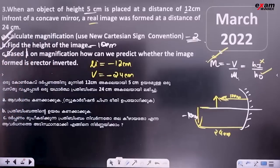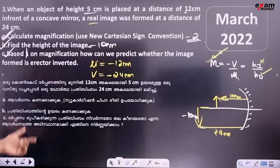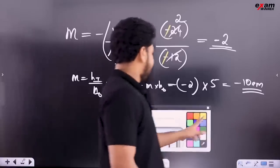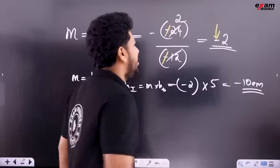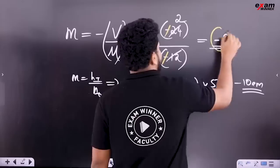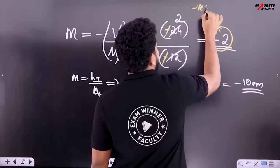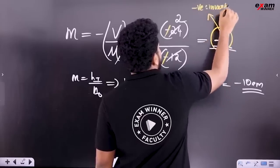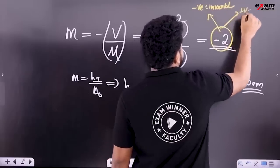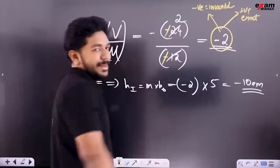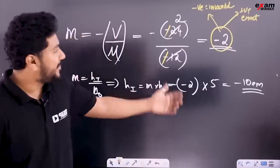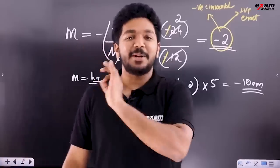Based on magnification, how can we predict whether the image is erect or inverted? The magnification value is negative. If magnification is negative, the image is inverted. If you have minus 2, you have negative, so the image will be inverted.